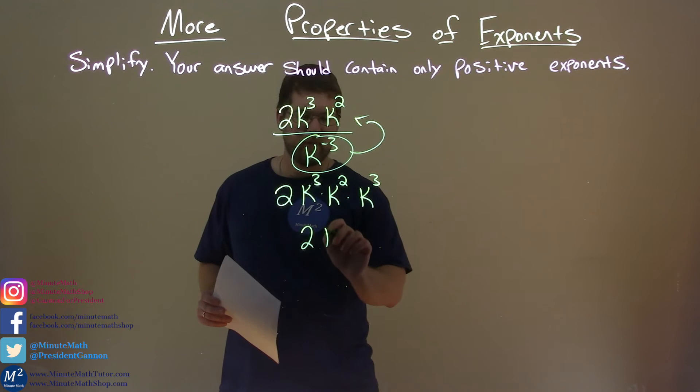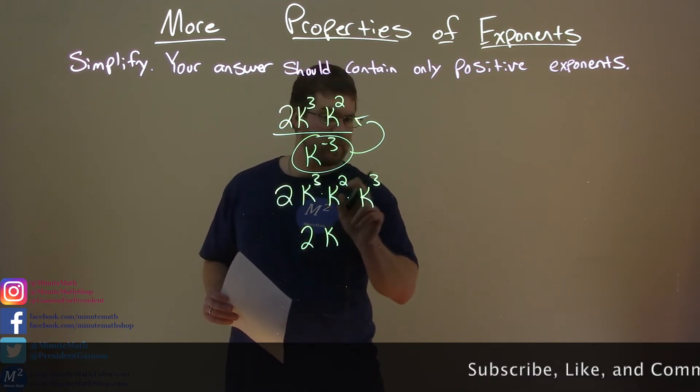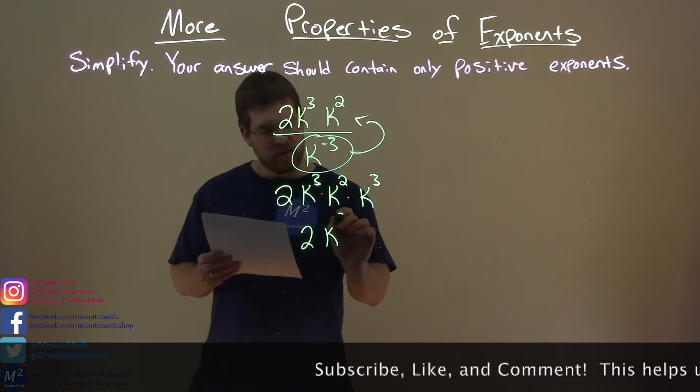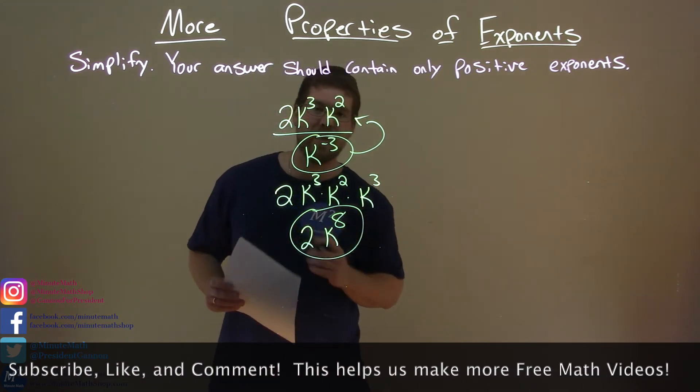So 2 comes down, we have a k, let's add it up. 3 plus 2 is 5, plus 3 is 8. So our final answer here is just 2k to the eighth power.